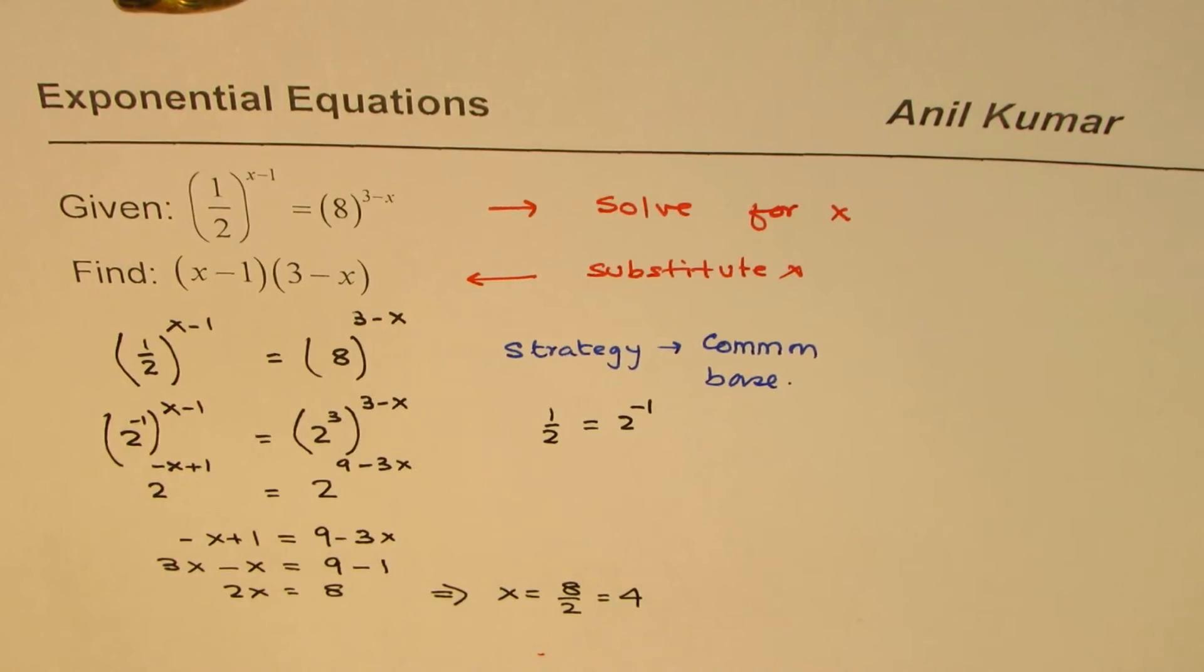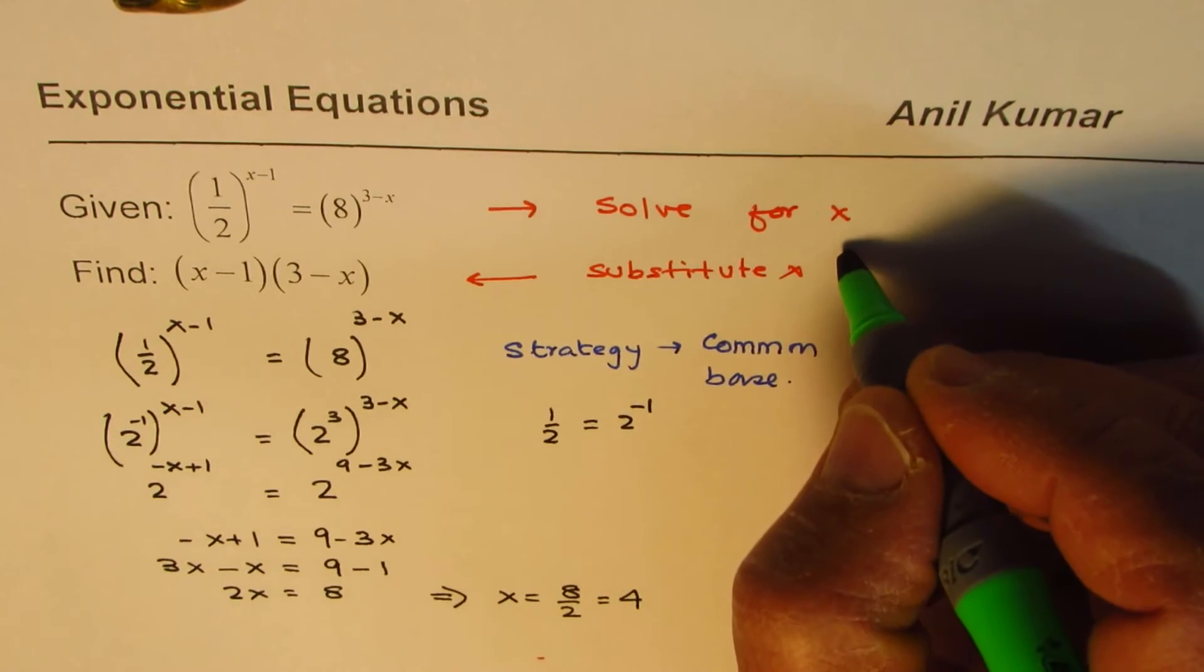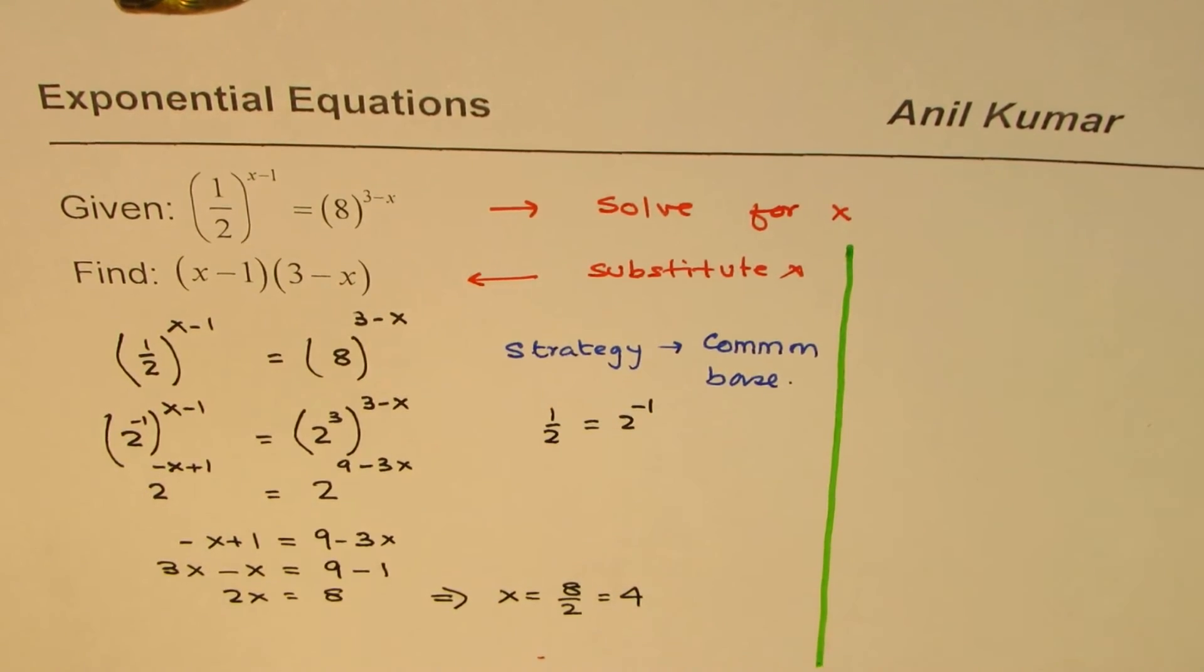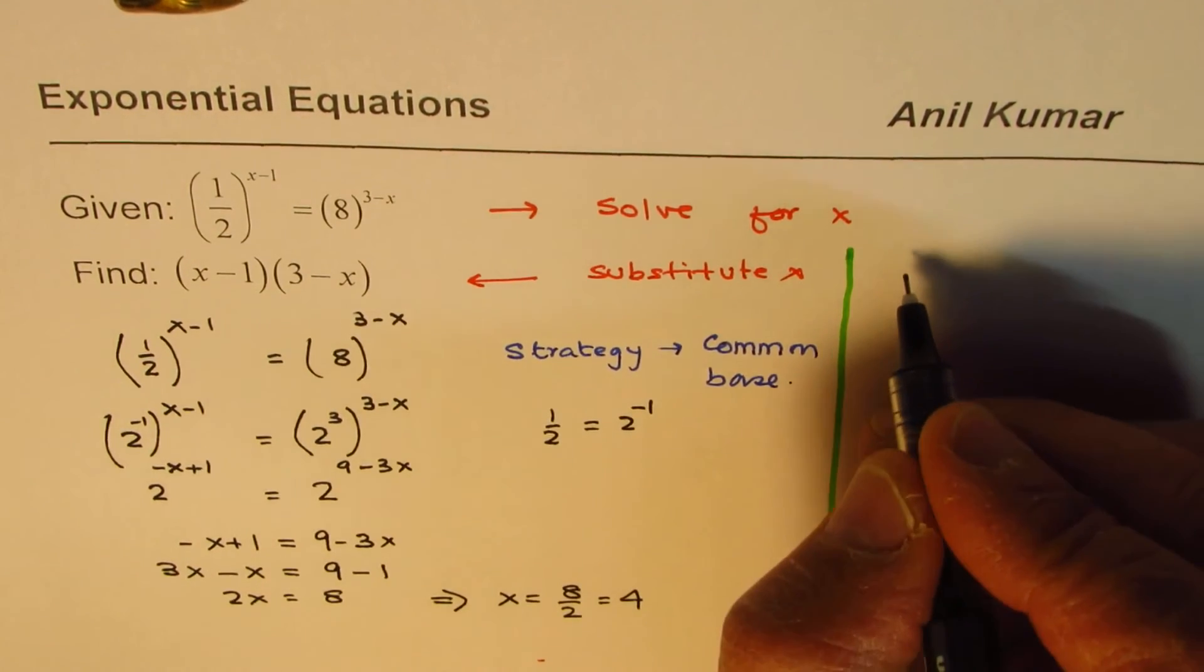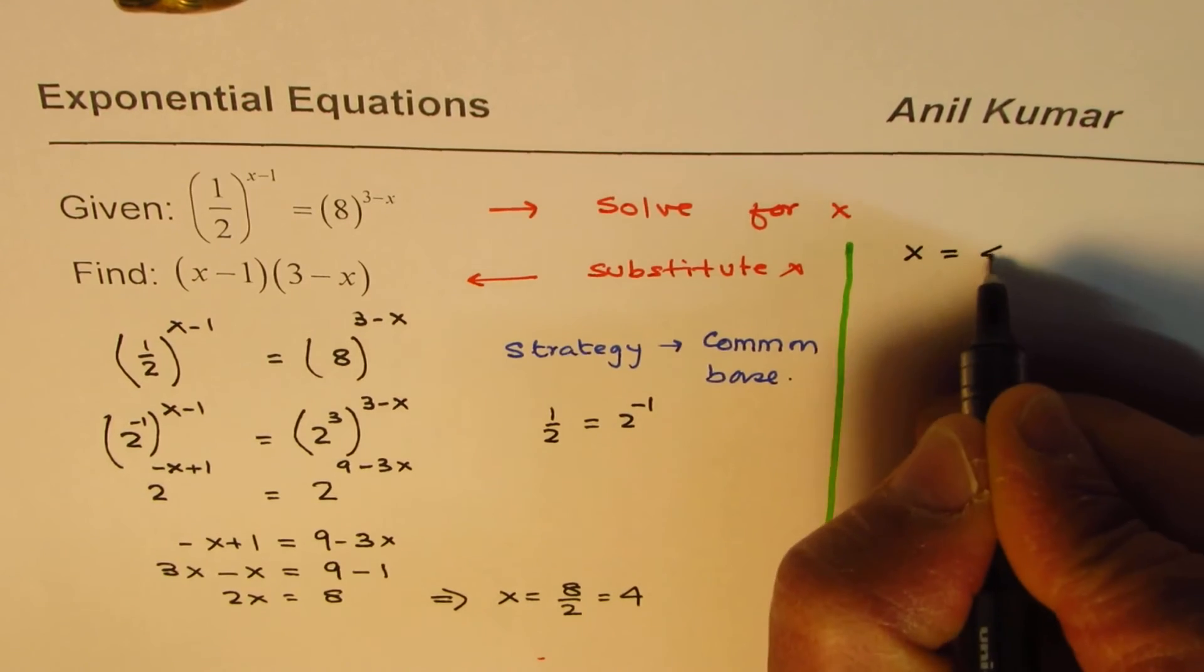So we get a solution for x. This is the first part to find the value of x. So we know if we solve this, we get x = 4. Now we can find the value of x-1, so we know x is equal to 4.